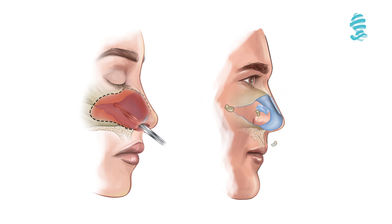An L-shaped cartilaginous septum is left in place to prevent settling of the nose. Straight fragments of cartilage and bone may be reinserted, and the resected cartilage may often be used during rhinoplasty as grafts.